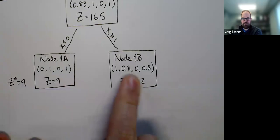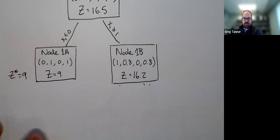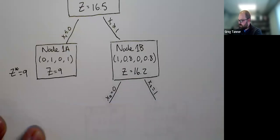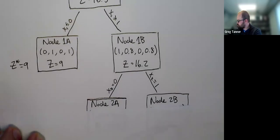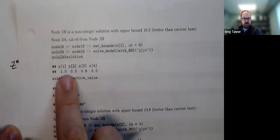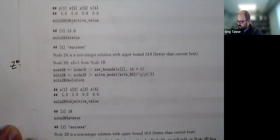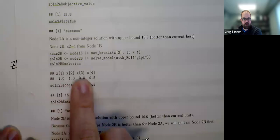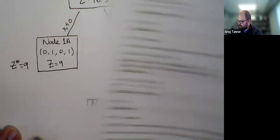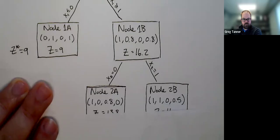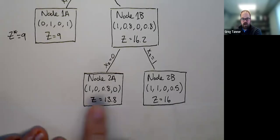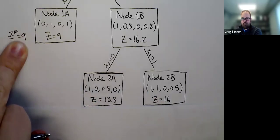And so we're going to continue to branch on this one. Notice we have two non-integer variables. We could choose either one. It actually doesn't matter at all which of those we choose. I usually just default to choosing the first one. And so I'm going to split on x2, forcing it to be zero and one. And that's going to give me node 2a and node 2b. So from there, here's node 2a and node 2b. Node 2a gives us a solution of 1, 0.8, 0, objective value 13.8, status success. Node 2b gives us 1, 1, 0, 0.5 with an objective value of 16, status success. And so add that to the diagram. We've got those two values. Notice they're both non-integer variables and they're both better than z star. So they're both eligible to be split.